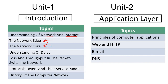Then we discussed the understanding of delay. We discussed four types of delay: transmission delay, processing delay, queuing delay, and propagation delay. These are the various types of delays in computer networks.